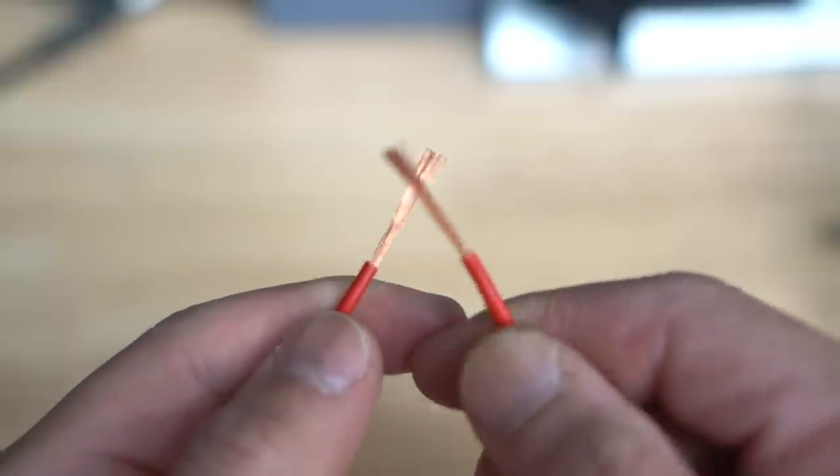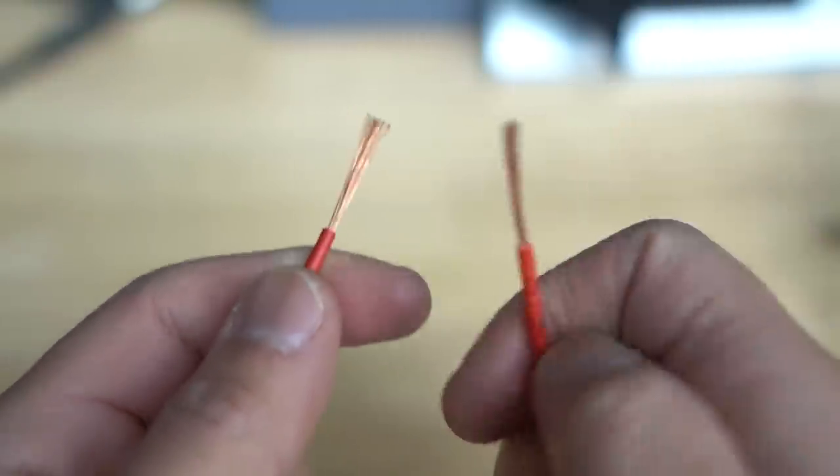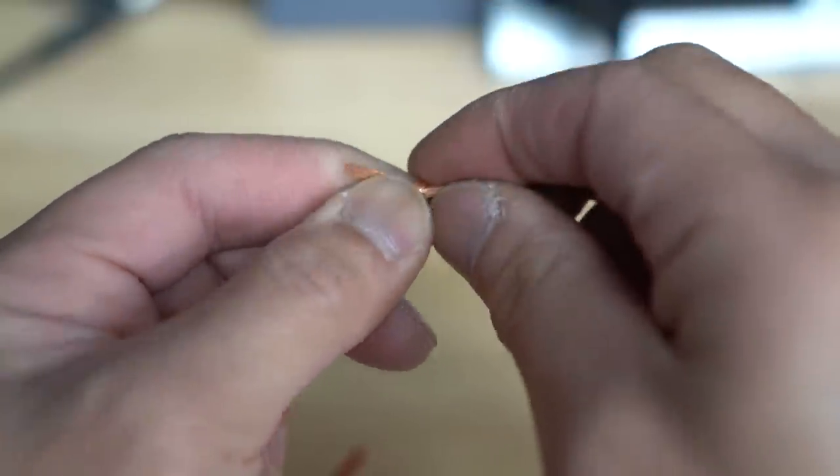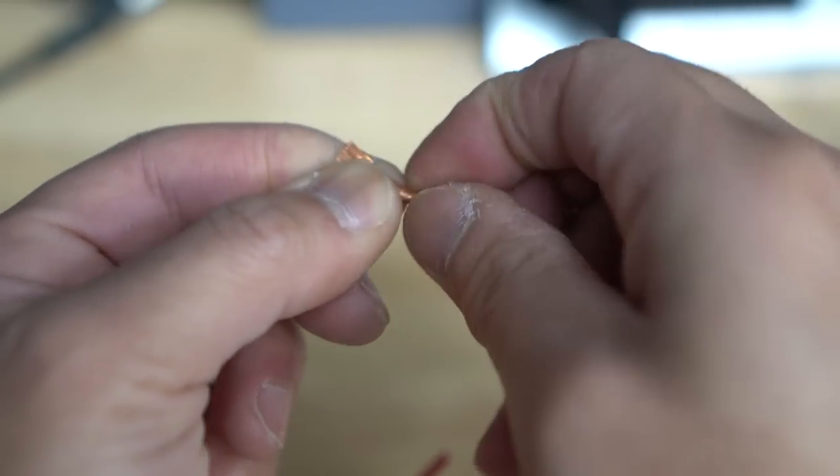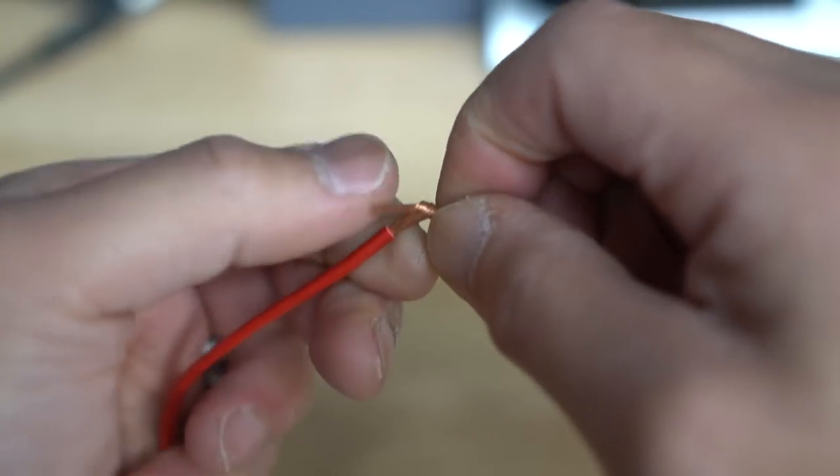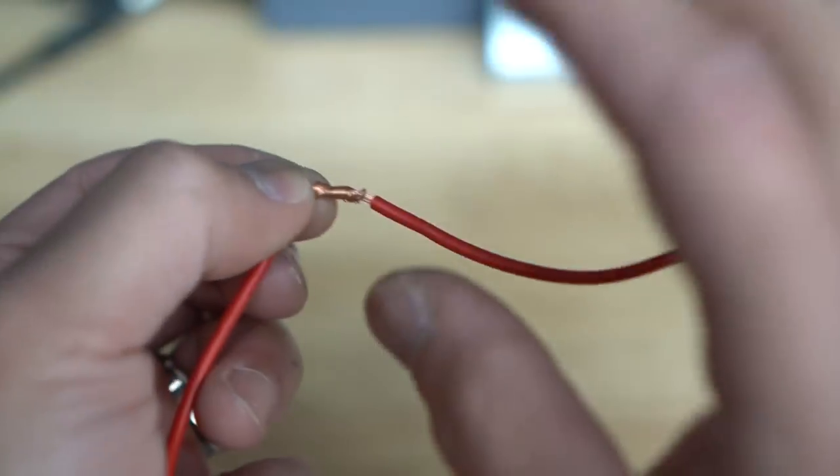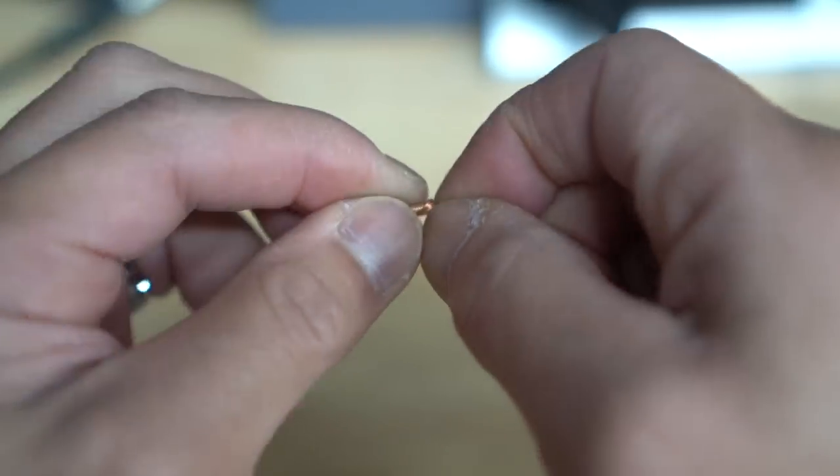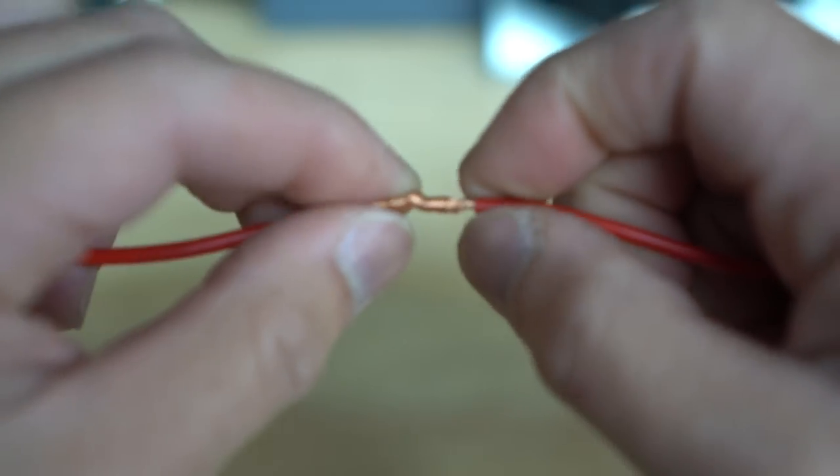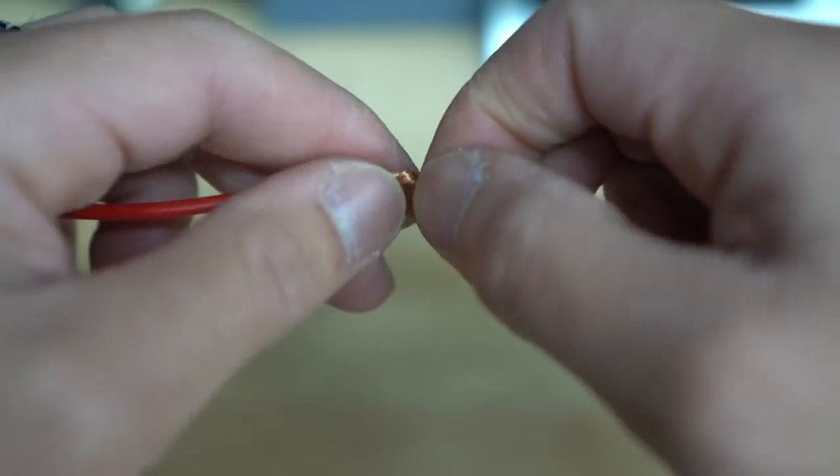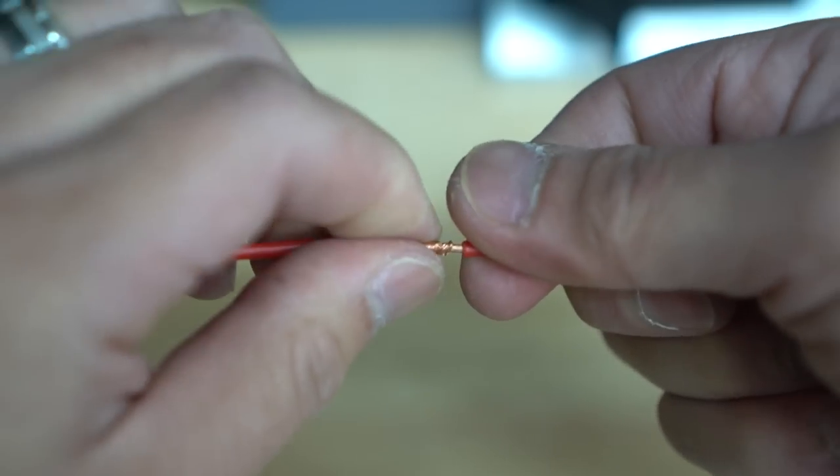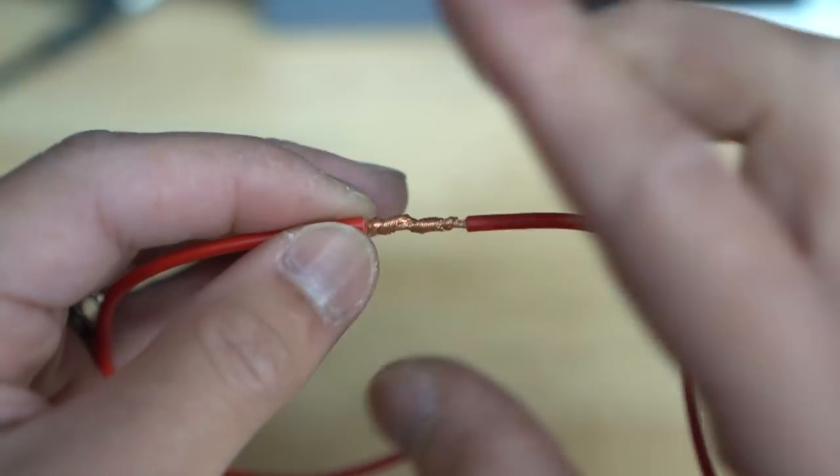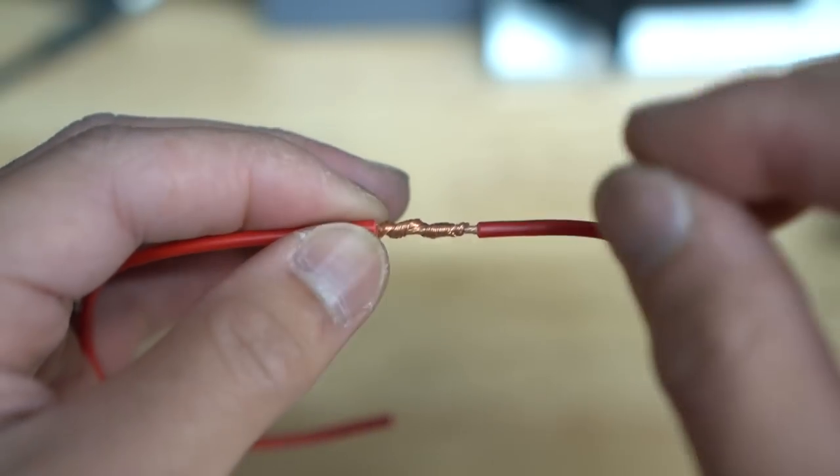The one I do recommend is the lineman splice or the western union splice, which I'll show you right now. Lineman splice or the western union splice is a lot more reliable, and it's very easy. All you have to do is strip your stranded wire, just like so, and you're going to cross it like this. One goes clockwise. The other one goes counterclockwise. And you're just going to feed it right through about three to four circles around. So that's one, two, three. And you're going to do the same thing on the other end. Given this is just an example, but if you are going to do this on a closed wiring system, you are going to put a sleeve first or a shrink wrap sleeve over there.